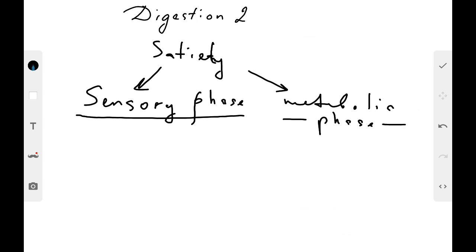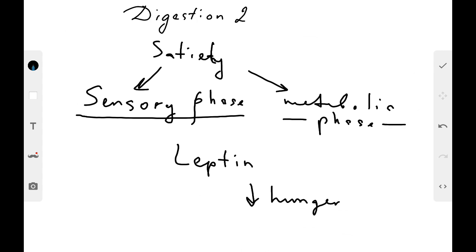Only after a few hours during the metabolic phase are nutrients actually absorbed into the bloodstream. Sometimes we are again hungry during that intervening period. So we have two phases of satiety: the sensory phase and the metabolic phase. Hunger and satiety are also regulated by special hormones. For example, leptin is produced by adipose tissue (fat-containing cells) and decreases hunger.